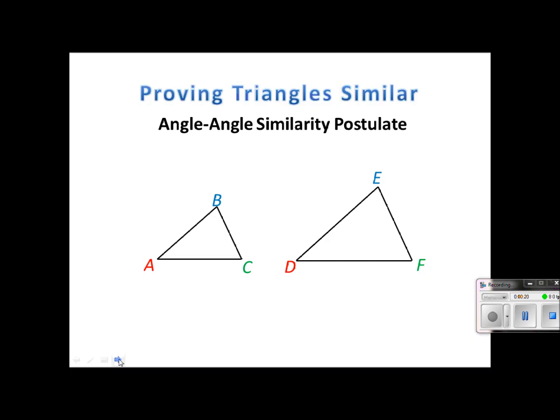called the angle-angle similarity postulate. And instead of writing out all of those words, all we have to do is use these two letters AA and then the similar symbol. And we use this to show that the two triangles are similar.